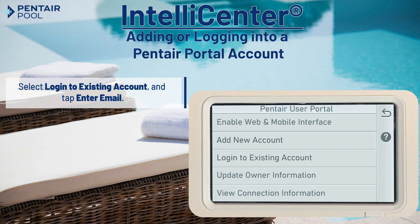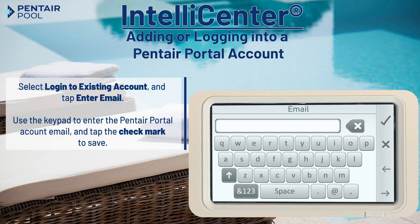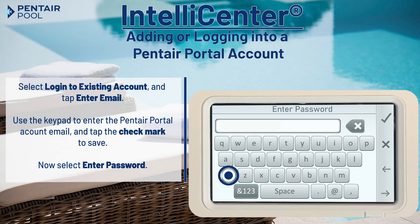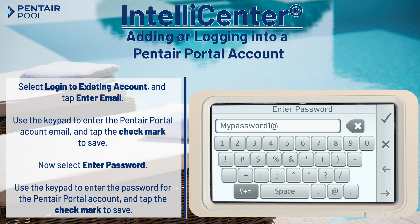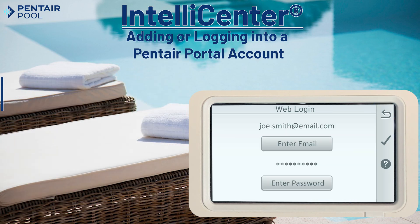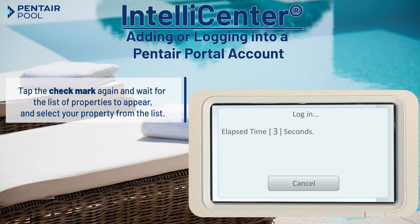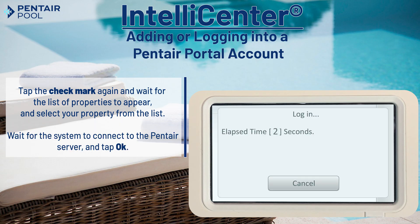Select login to existing account and then tap enter email. Use the keypad to enter the Pentair portal account email address and tap the check mark to save. Now select enter password and use the keypad to enter the Pentair portal account password and tap the check mark to continue. Tap the check mark again and wait for the list of properties to appear, then select the property you wish to replace. Wait for the system to connect to the Pentair server and tap OK.